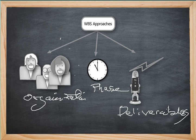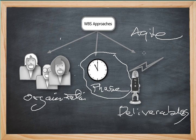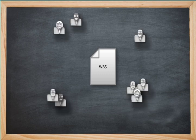According to Rita Mulcahy's PM Crash Course book, she prefers building WBS by phase and not by organization or deliverables. Her reasoning is that understanding one work package's dependency on other work packages works best. This also fits with Agile, where work packages can be grouped together into short development cycles called sprints.